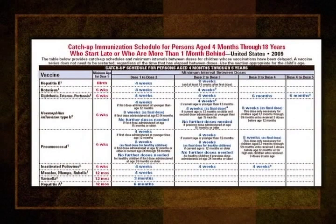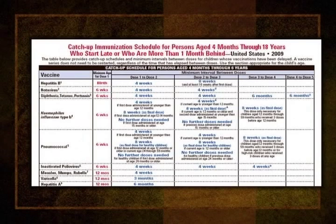Remember to stay on the routine schedule whenever possible, but sometimes children fall behind. If this happens, talk to the parent about the importance of staying on schedule, flag the chart for special attention, and speed up or accelerate the vaccination schedule—giving doses with the minimum acceptable intervals until the child is caught up. The ACIP and the Academies of Pediatrics and Family Physicians publish a harmonized catch-up schedule every year. There is a version for children 4 months through 6 years of age and another for children 7 through 18 years of age. The catch-up schedules are also available on the CDC Vaccines and Immunization website. Be sure to take some time to look at them carefully and read all the footnotes.